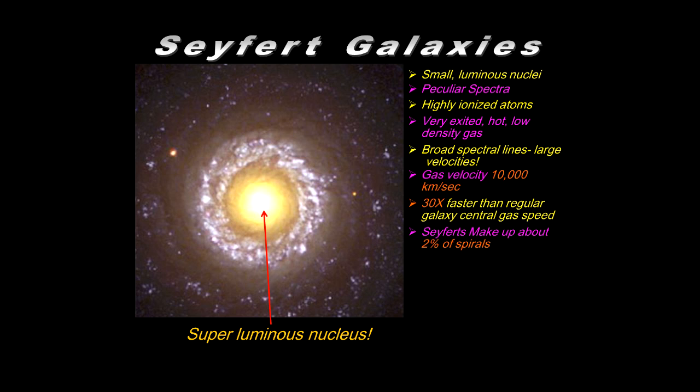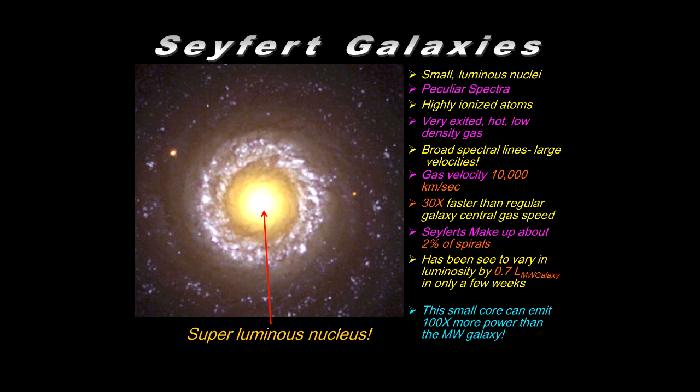The Seyferts make up about two percent of the spirals that are out there, and the variation in the luminosity of that core is seen to change by as much as 70 percent the luminosity of our entire galaxy. Many billions of solar luminosities, 70 percent of that in only a few weeks. Now that's hard to imagine, coming from the core of one galaxy, that it could change 70 percent the luminosity of the entire galaxy in just a few weeks. Well, that small core can emit 100 times more power than the entire galaxy. So these are very strange objects that certainly get our attention.